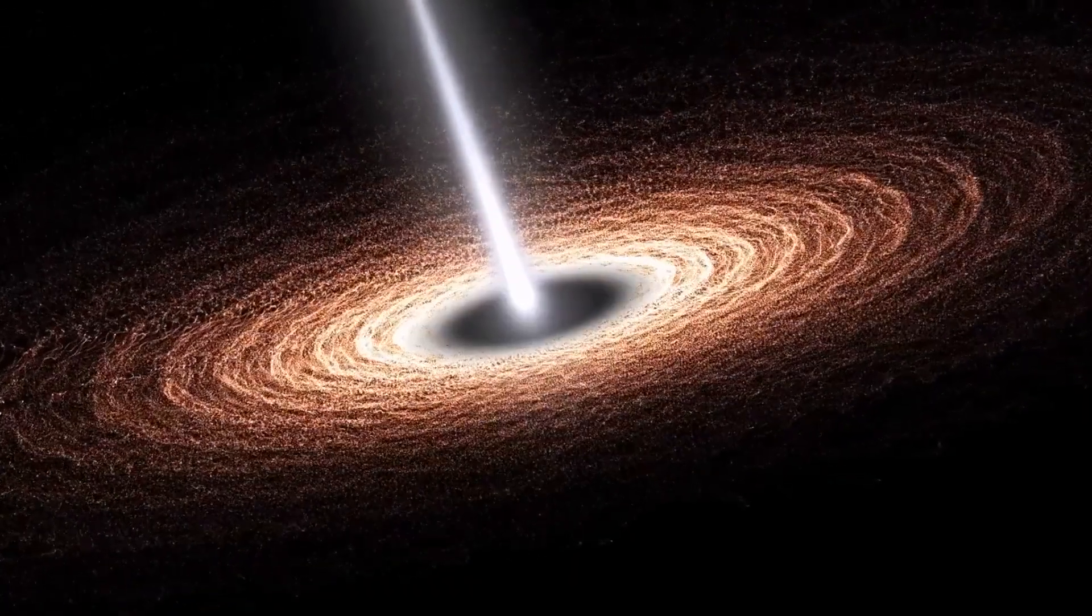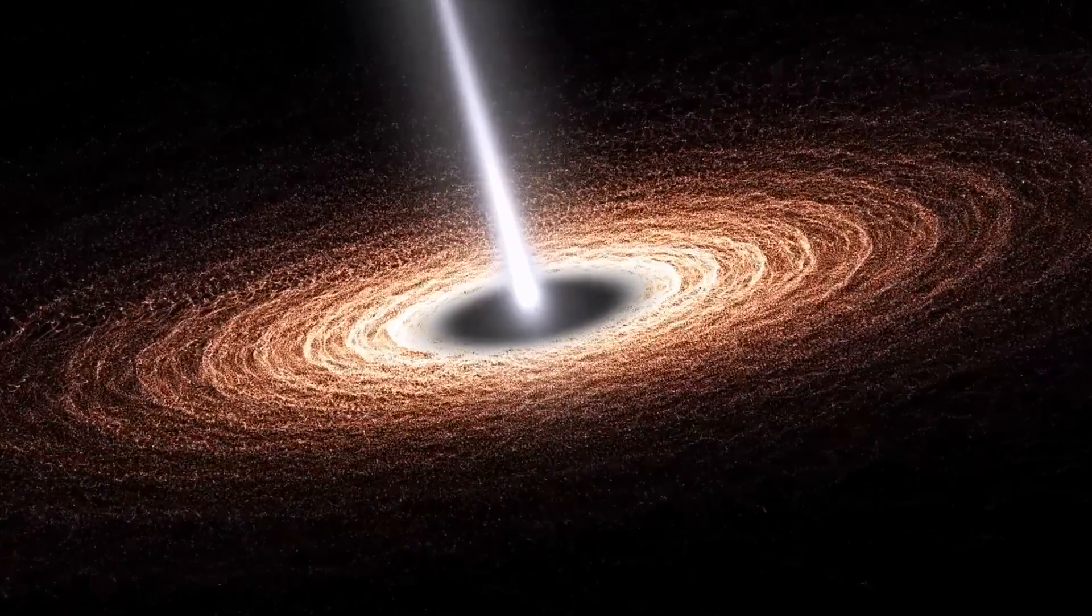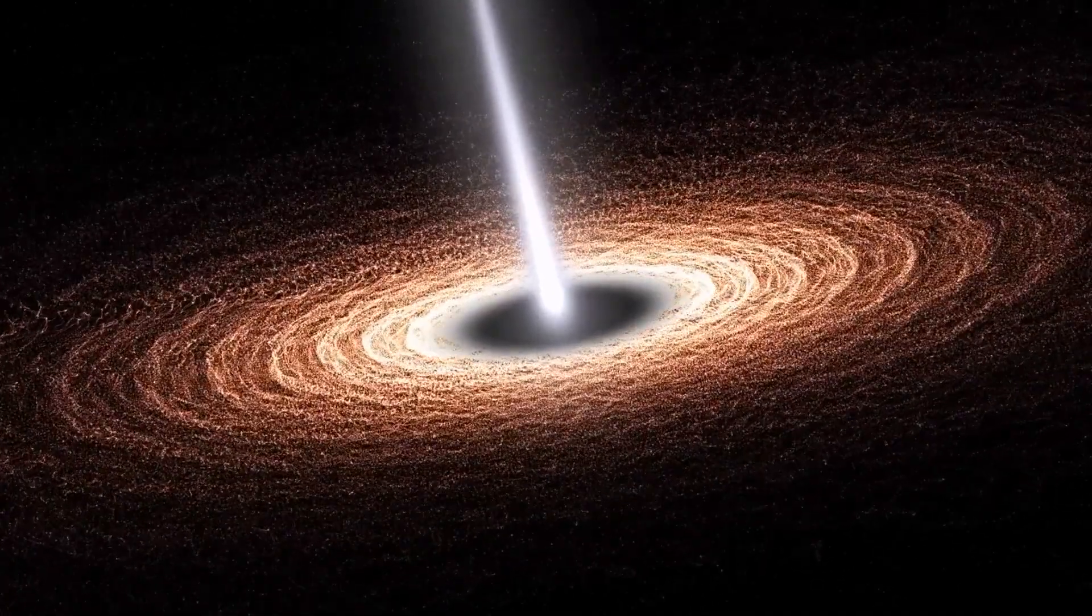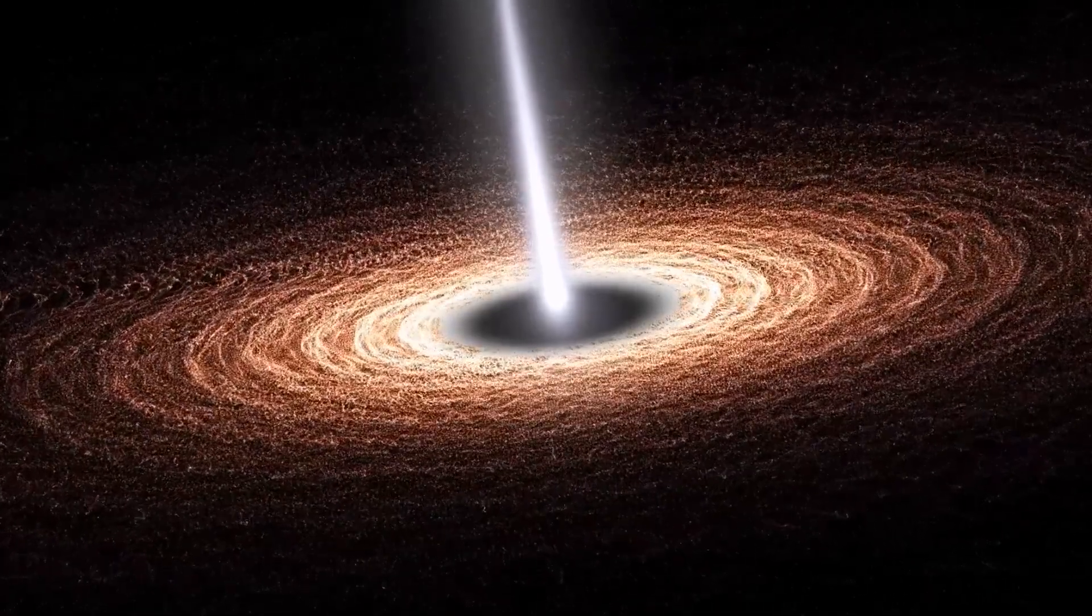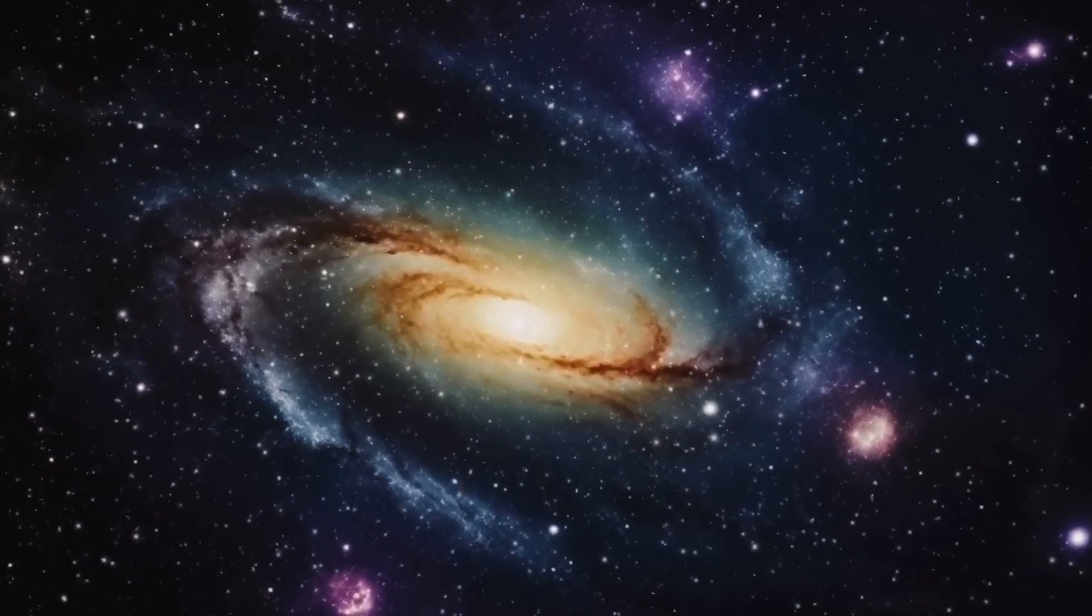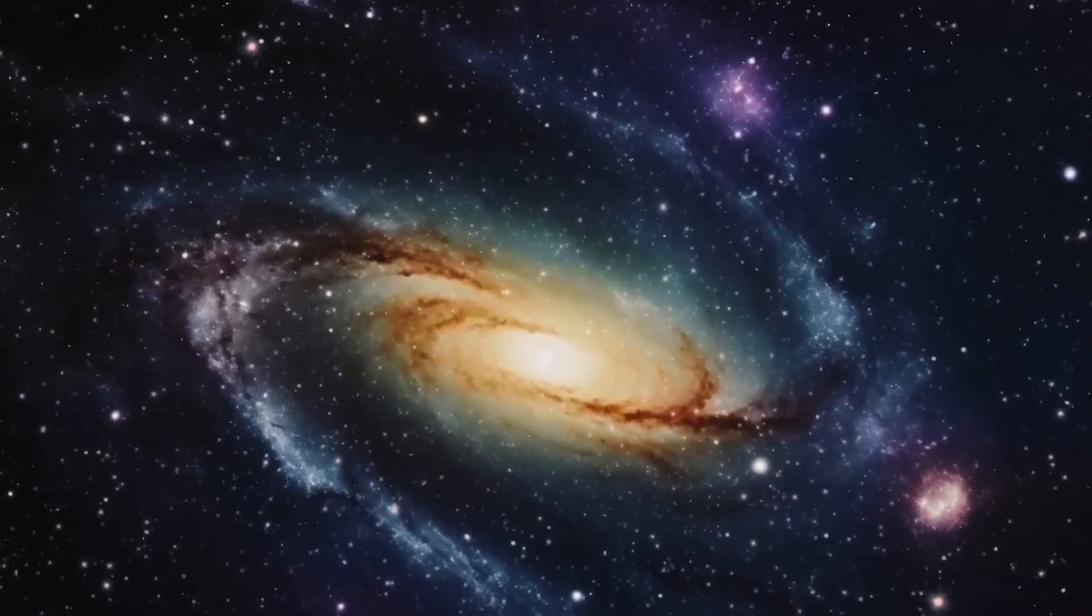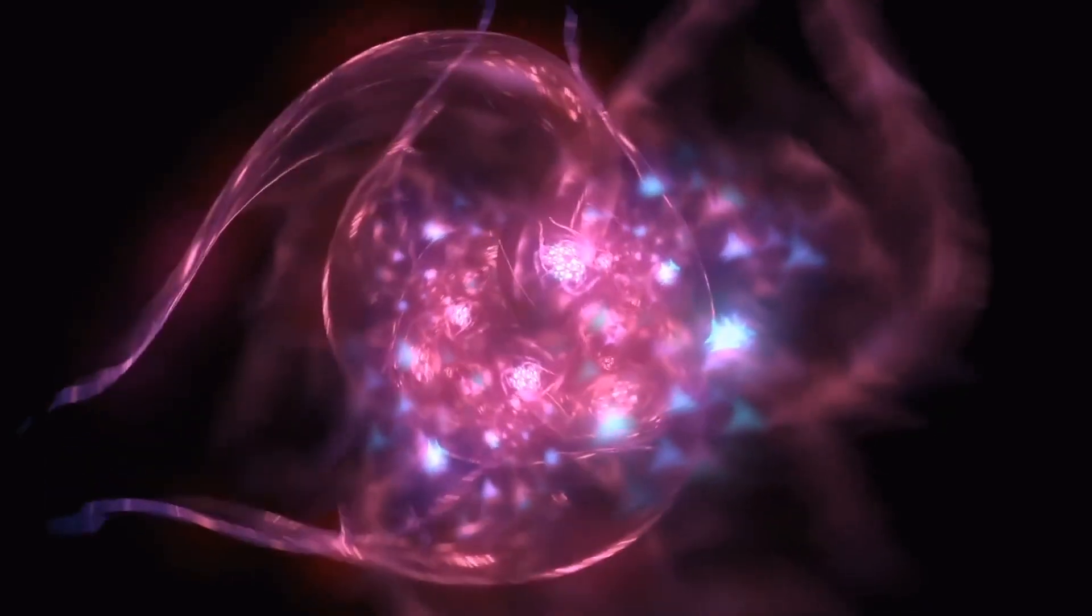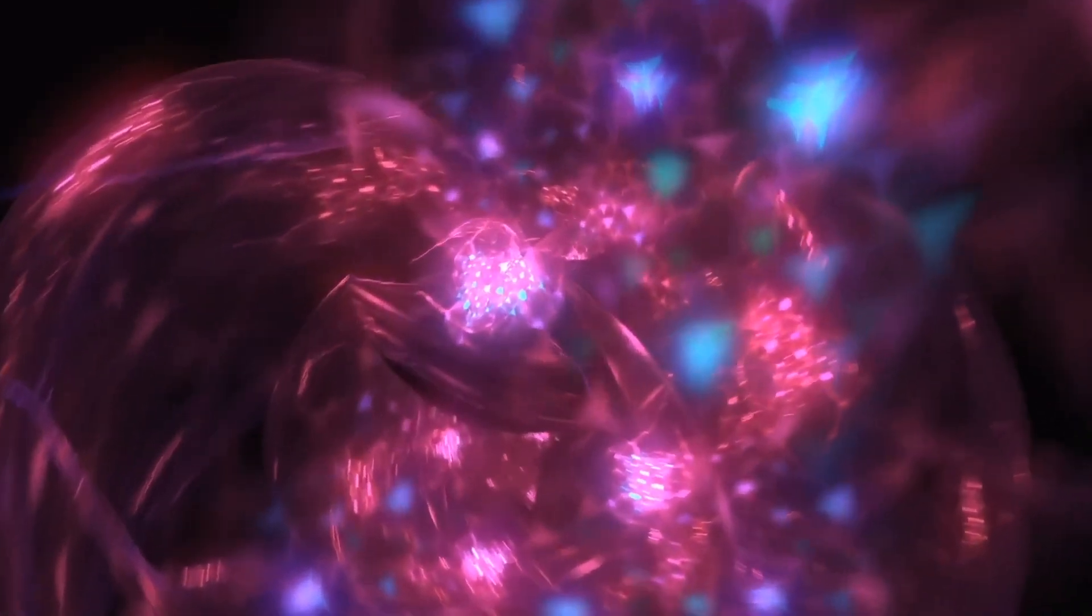If these black holes at the center of galaxies were once dead stars growing huge by sucking in matter or merging with each other, it took millions or billions of years to grow to this size. Consider that the discovered galaxies existed 13.6 billion years ago, and the Big Bang is supposed to have happened 200 million years earlier. You probably realize that the calculation no longer works, and we need to completely revise our knowledge of black holes, star formation, and galactic formation.